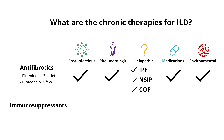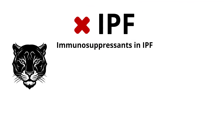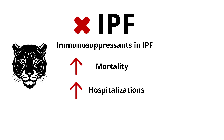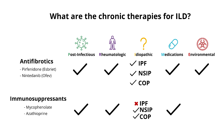Our next line of treatment is immunosuppressant agents. These include mycophenolate and azathioprine, but they are not for everyone. Here, the alphabet soup is actually relevant. Immunosuppressants should not be used in patients with idiopathic pulmonary fibrosis, or IPF. This guidance comes from the PANTHER trial, which showed that compared to patients in the placebo arm, patients with IPF who were treated with immunosuppression had increased mortality, more hospitalizations, and more adverse events — not so good.